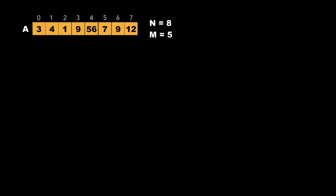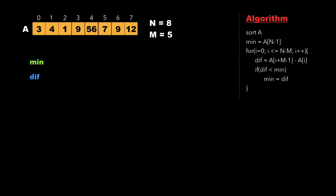Let's consider the same example as given in the question, where we have an array of size 8 — that is, 8 chocolate packets — and the number of students is 5, so m equals 5. Let's declare a few variables, namely min and diff. The right side of the screen shows the algorithm, where we first sort the array in ascending order.